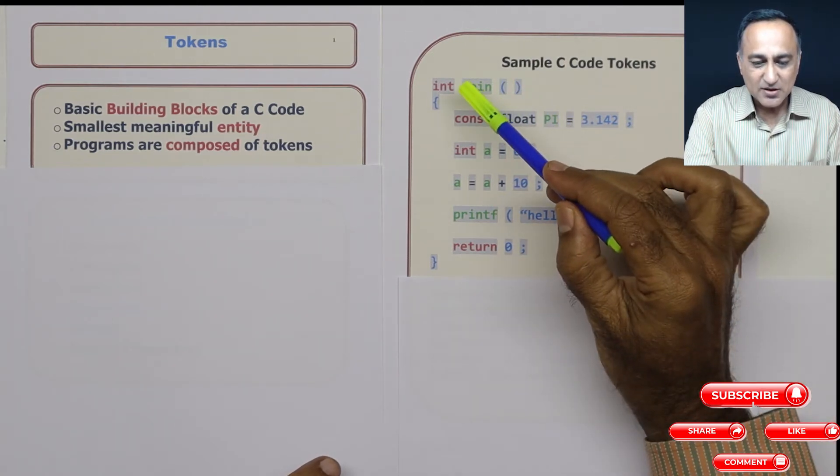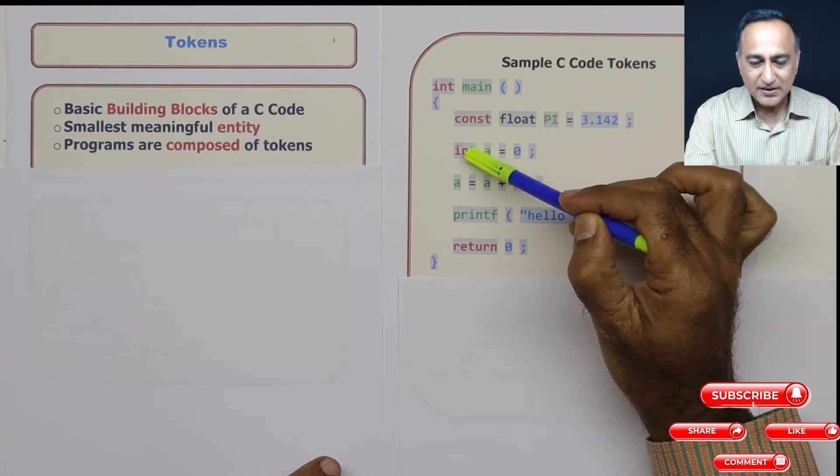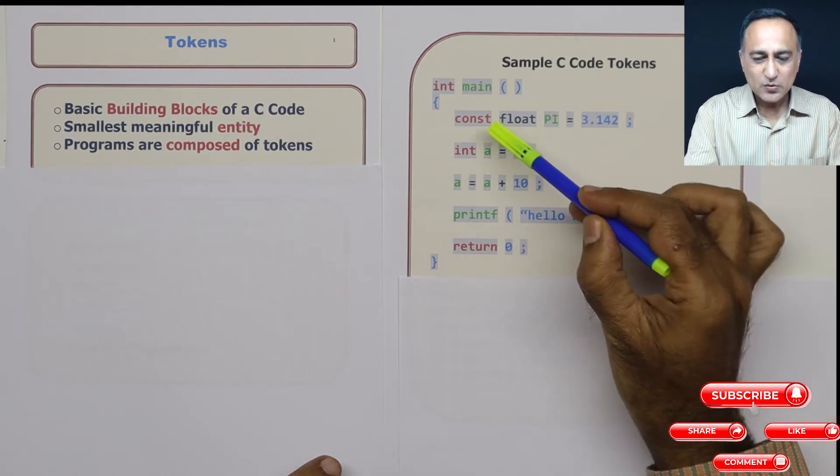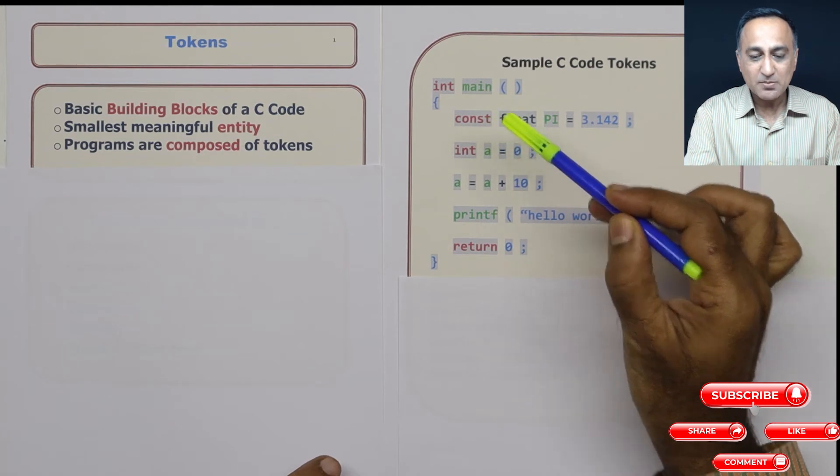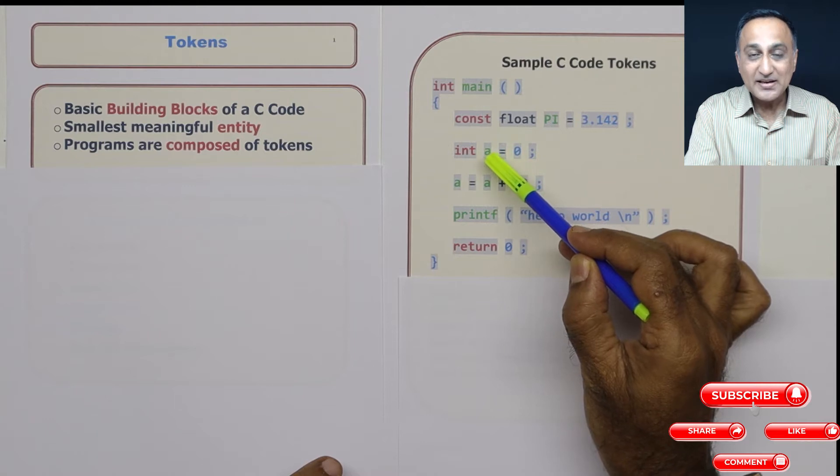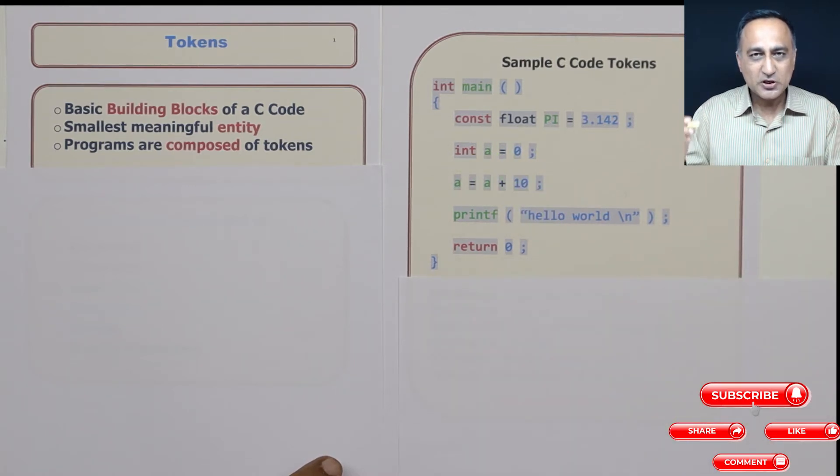The first one are words like int, const, float. These all have special meaning to a C compiler. These are known as reserved words or keywords in common discussion. Reserved words or keywords have specific meaning. When I say int a, it indicates that a is going to be an integer type of data. That's why int has a special meaning or special significance to a compiler.